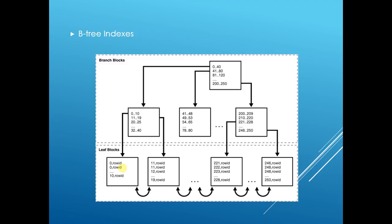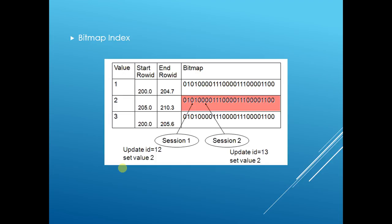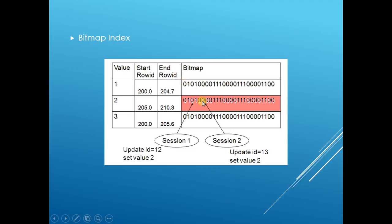Next is the bitmap index, which contains the value in the form of bits. For each value, the number of bits represents the number of rows in your table. One means the value is present in that row and zero means the value is not present.